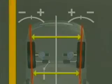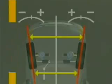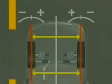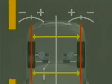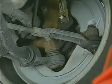Toe is negative, or toe-out, when the rear of the tires are closer together than the front of the tires. Zero toe occurs when the wheels are parallel. Toe is adjusted with the tie rod end adjusters, and the steering wheel can also be centered using this adjustment.